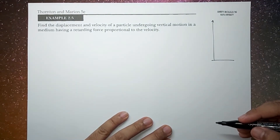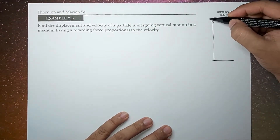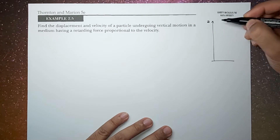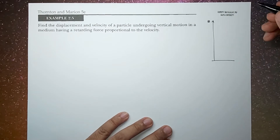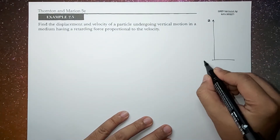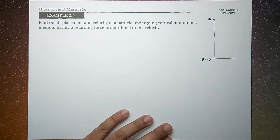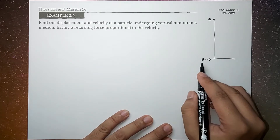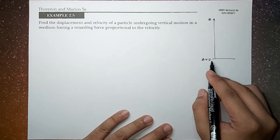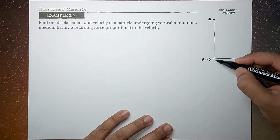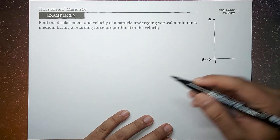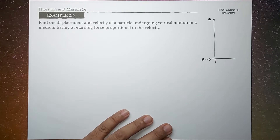Let's say that vertical is along the z direction, so that means the ground — or we can set the reference position — is at z equal to zero.